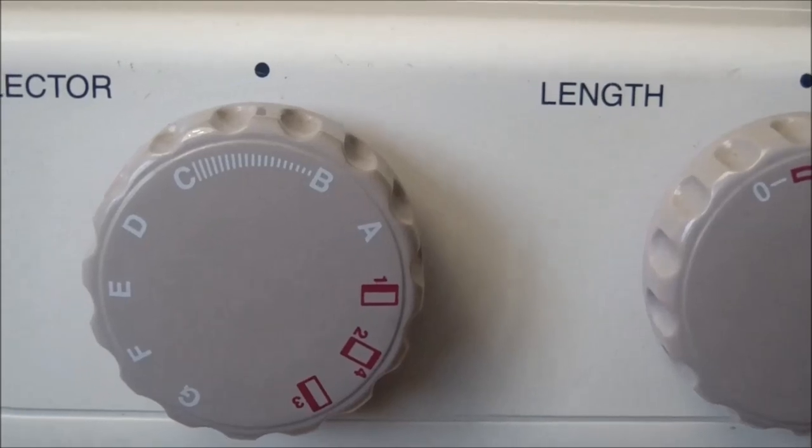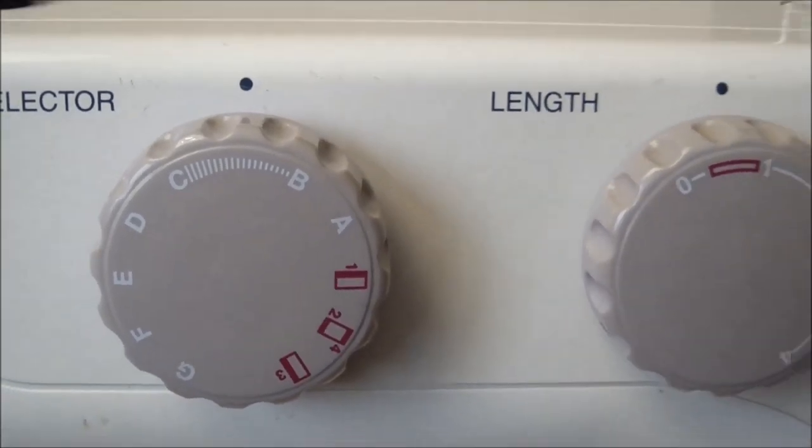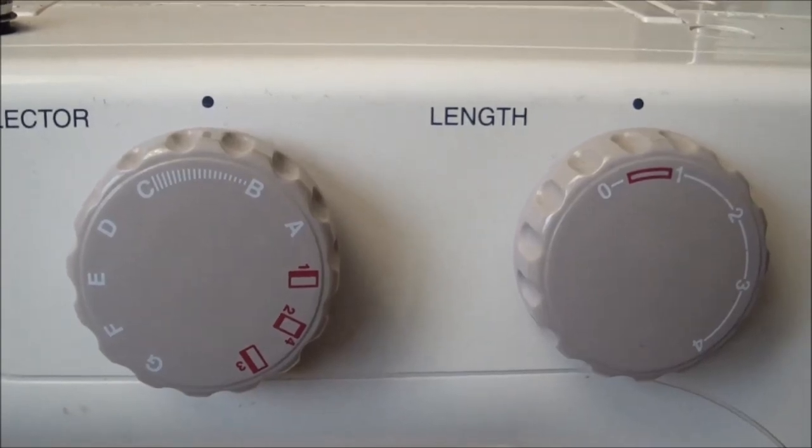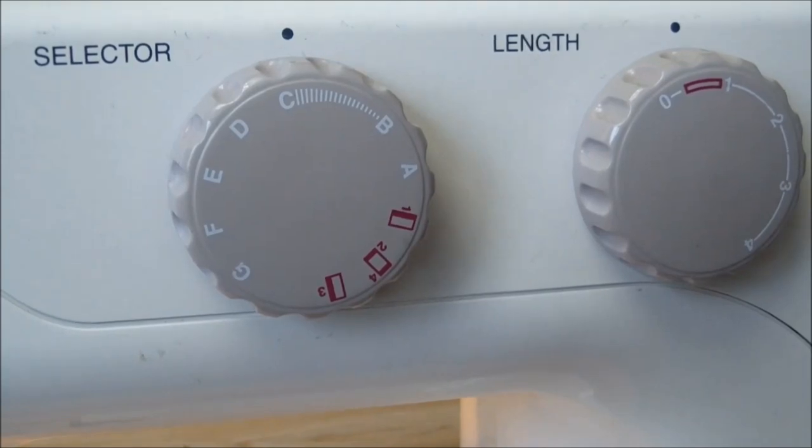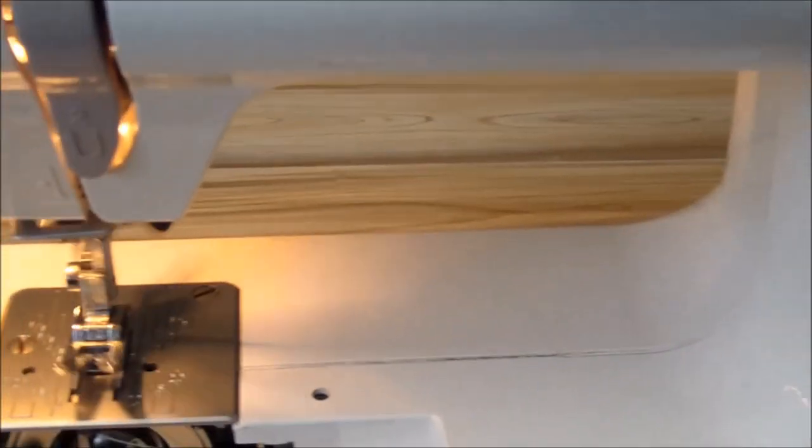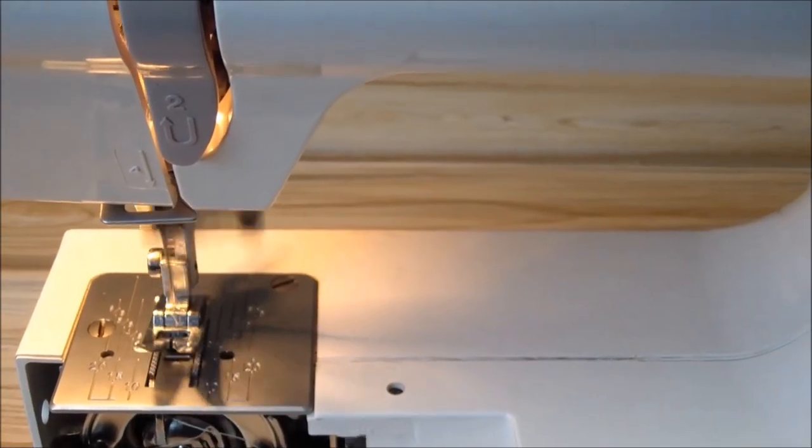By the appearance of these knobs, you can determine the degree of wear on the sewing machine. Be sure to check the correct operation of at least the main stitches and operations, as well as the reverse stitch.